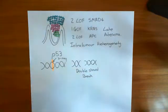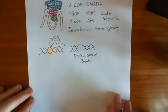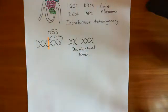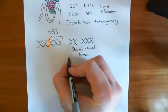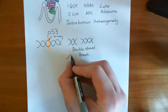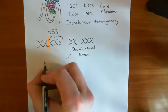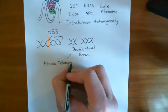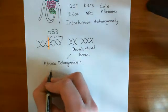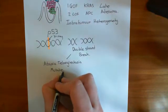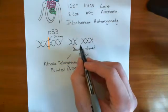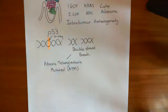How does the cell respond to this DNA damage? There are certain proteins which become active when they recognise damage to DNA. Two examples are ataxia telangiectasia mutated — abbreviated ATM — and ataxia telangiectasia and RAD3-related protein, abbreviated ATR. ATM recognises DNA double strand breaks and becomes an active kinase enzyme when double strand breaks are detected.